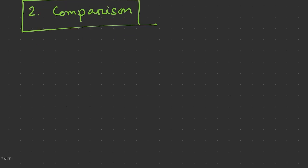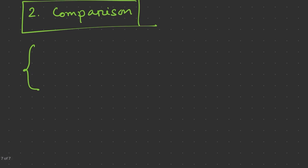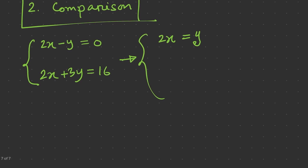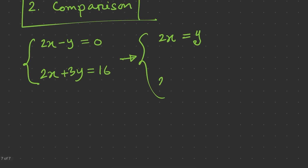Our second method is comparison. The comparison method involves solving both equations for the same variable and then equating the two expressions. This works well when both equations can be easily rearranged. Using our equations 2x minus y equals 0 and 2x plus 3y equals 16, let's solve both for x: from equation 1, 2x equals y; from equation 2, 2x equals 16 minus 3y.